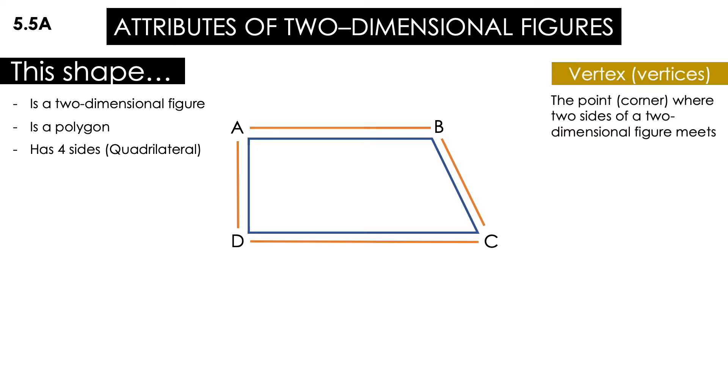Now let's talk about the vertices. These are the points, or the corners, where two sides of a two-dimensional figure meet. With that being said, I have here how many corners or how many points? I have four points. That means four vertices.